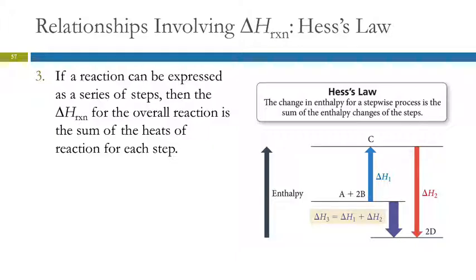And this is important because we can use this to predict energy changes for reactions that we haven't actually done. So what we're doing here is we're taking chemical reactions, chemical equations. So A plus 2B going to C, and so that has a ΔH, ΔH1. And then we take C and that goes to 2D, and that has a ΔH we're calling it ΔH2.